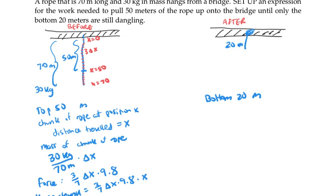To find the work on the entire top 50 meters, that's going to be the integral of all these pieces: (3/7) times 9.8 times x, and the delta x becomes dx. For the bounds of integration, the smallest x value for that top 50 is x equals 0, and the largest x value for that part of the rope is x equals 50. So those become our bounds.